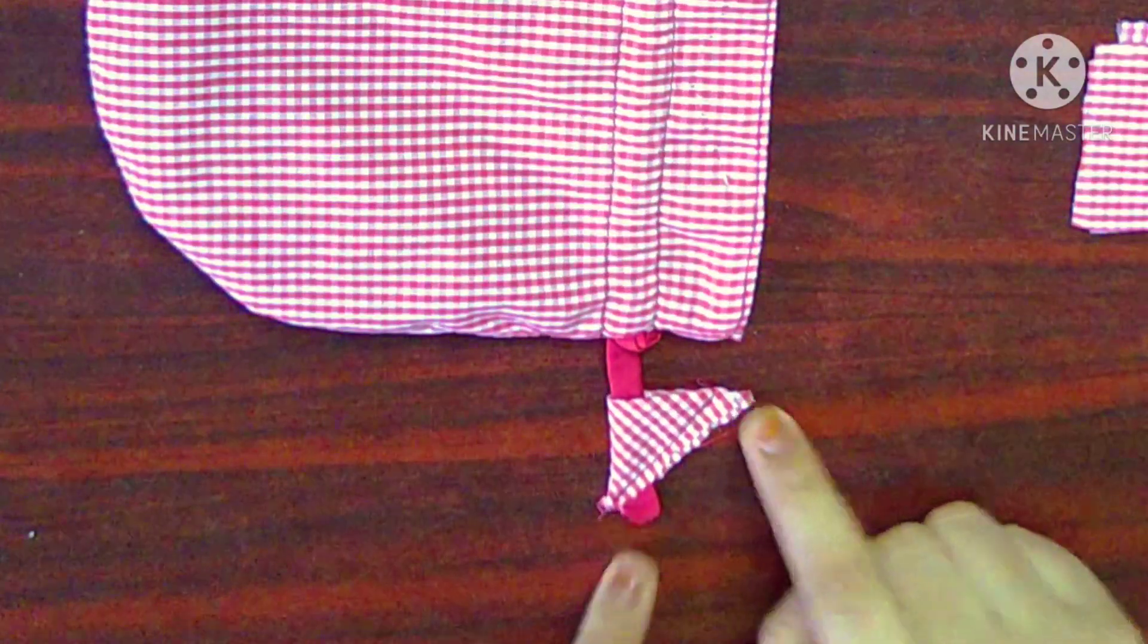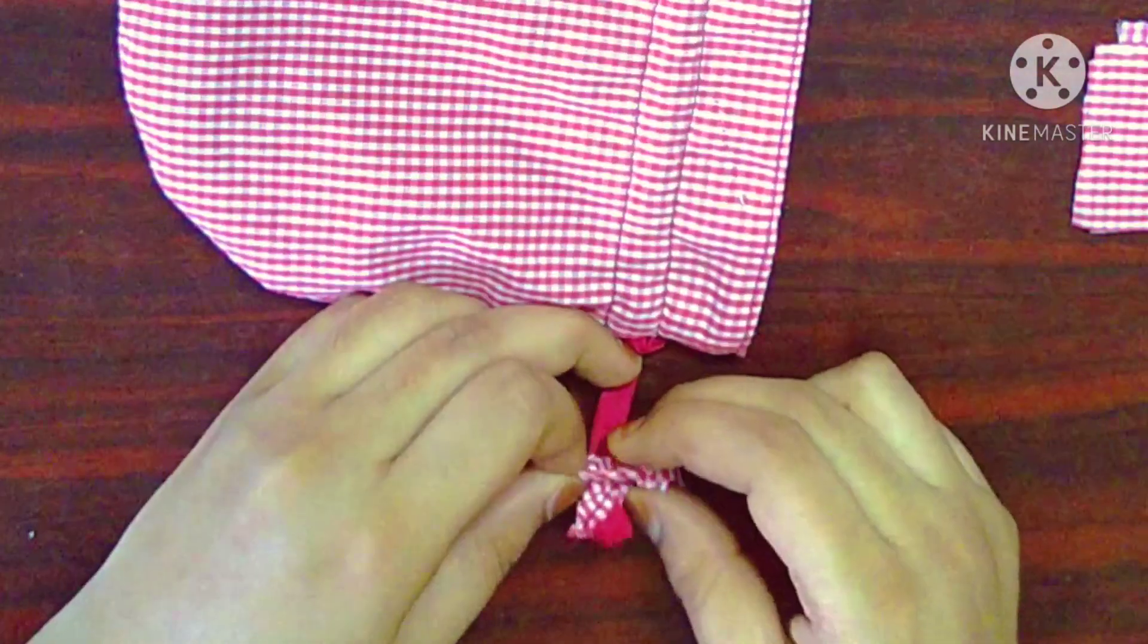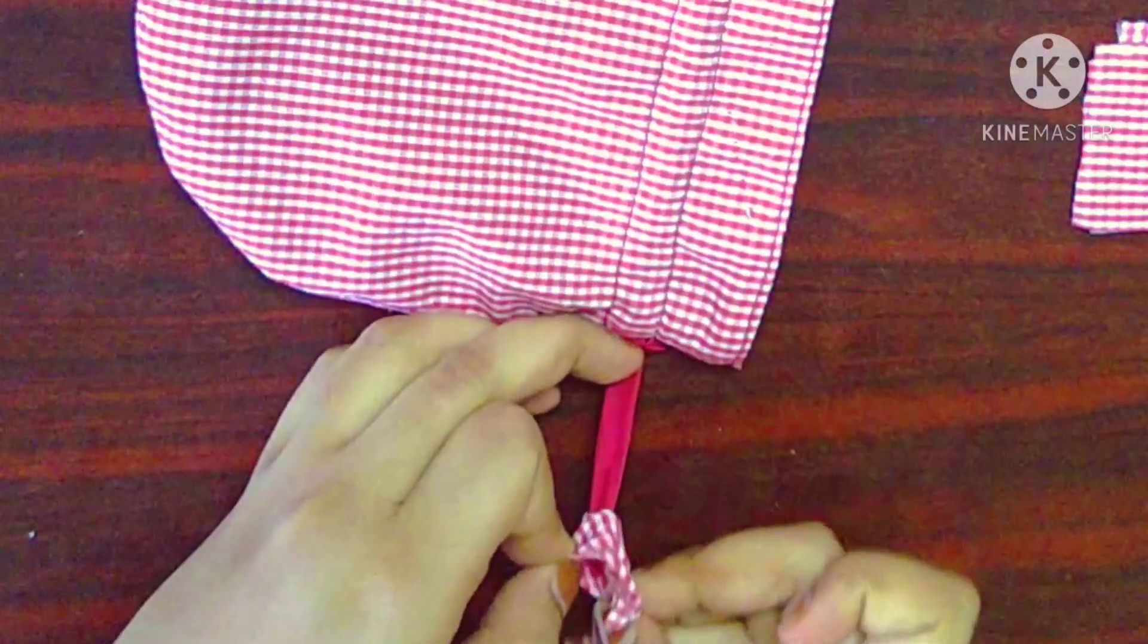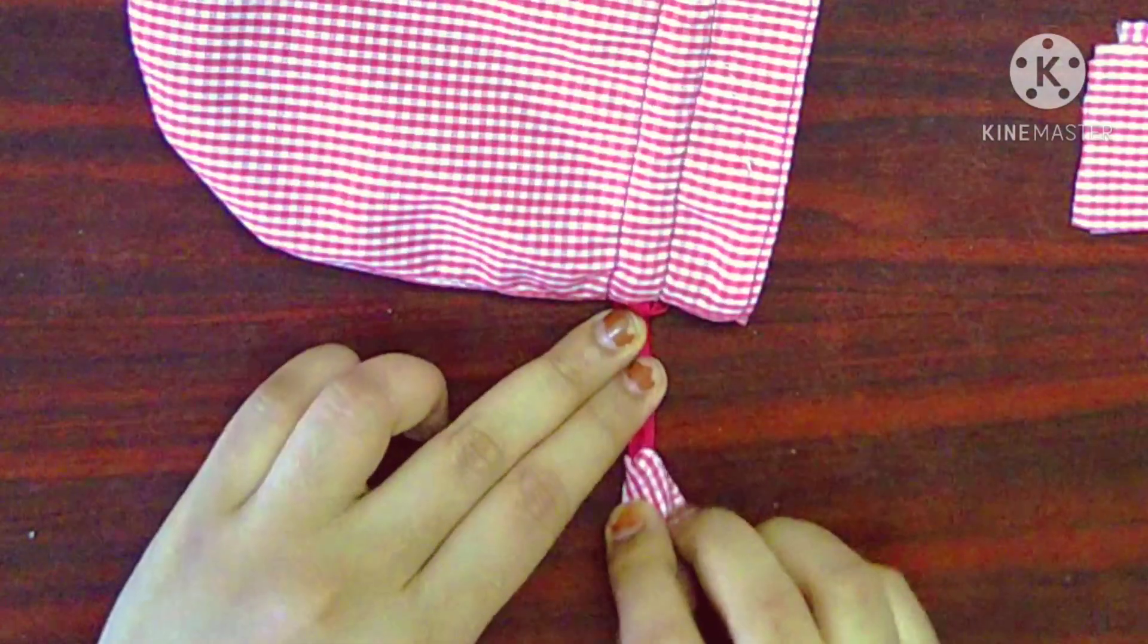It will look something like this. Now, you will pull this triangle downwards to form a bell at the end of the string.